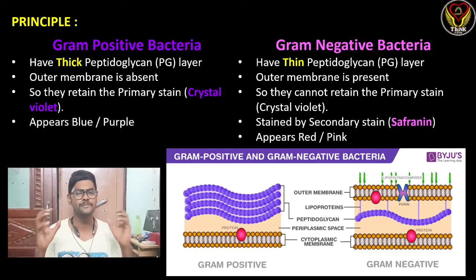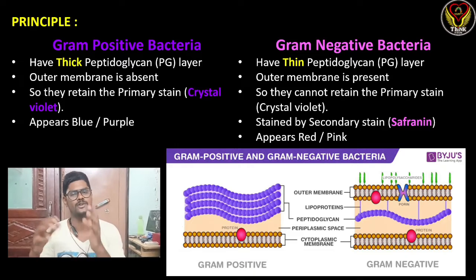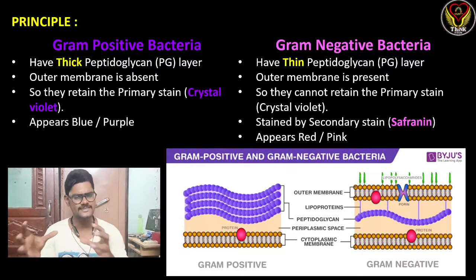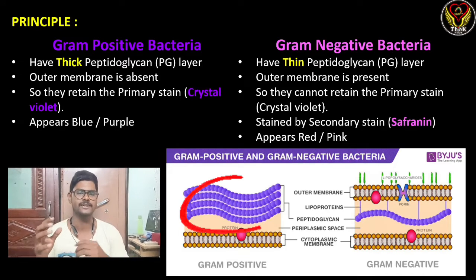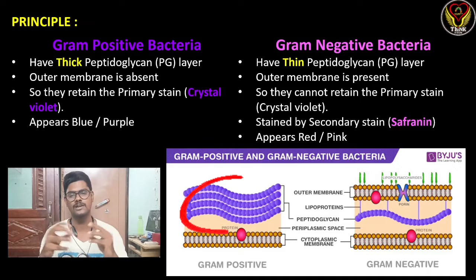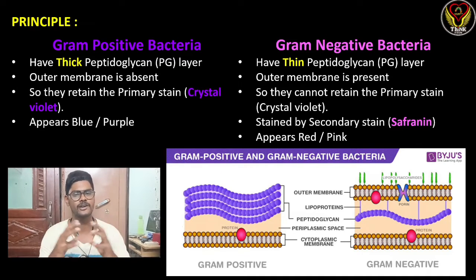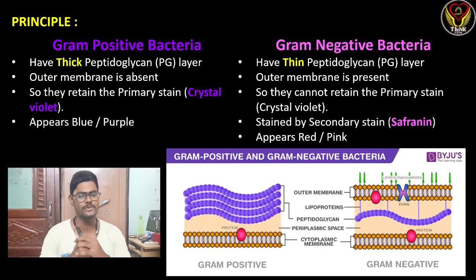Now let's check out the principle of this technique. We are categorizing bacteria into two types: gram positive bacteria and gram negative bacteria. Gram positive bacteria have a thick peptidoglycan layer, which is the cell wall, and there is no outer membrane covering it. So they can retain the primary stain, crystal violet, and appear blue or purple.